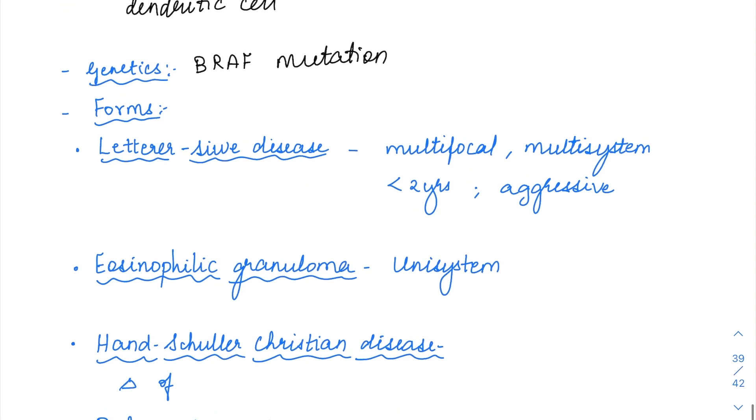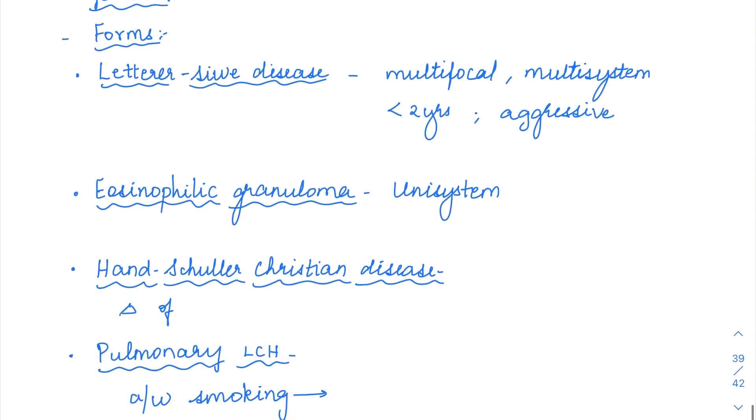What are the various forms of this LCH? There are three basic disease forms. It is not important nowadays. Previously, this system was followed. Just remember the names because they are fancy names. The first form of the disease is going to be a multifocal disease involving multiple systems and it is given a syndrome name which is Letterer-Sieve syndrome.